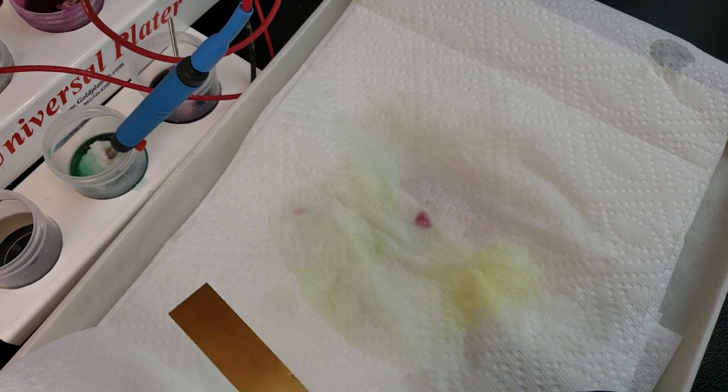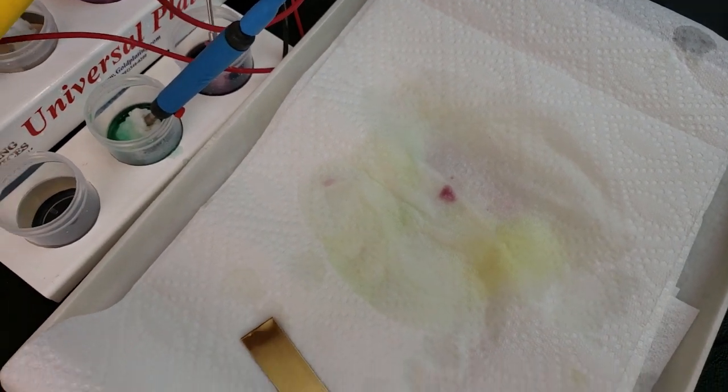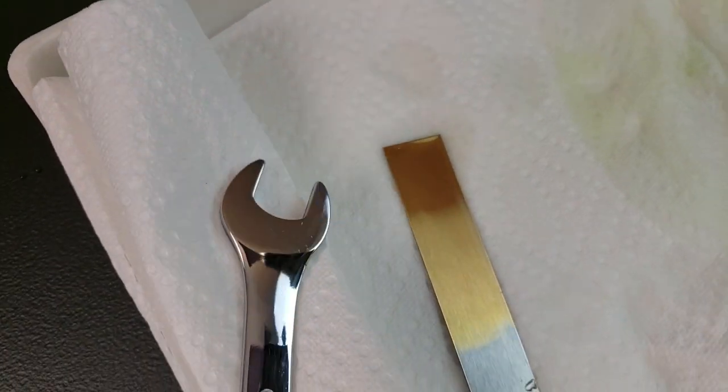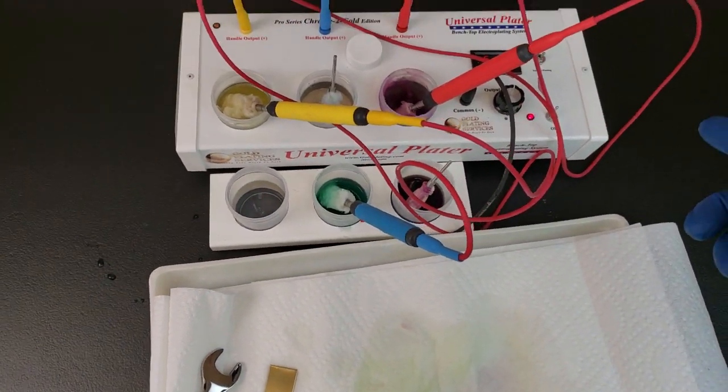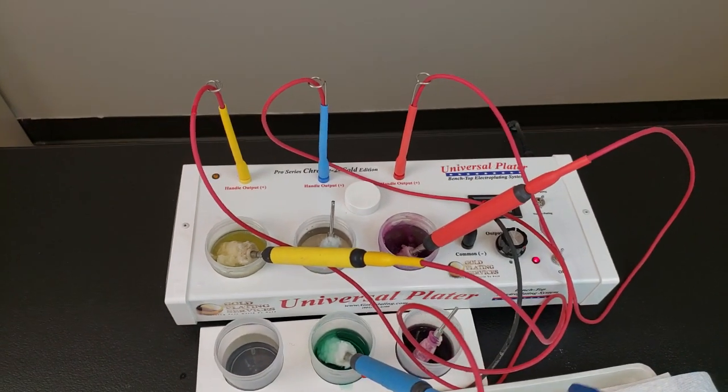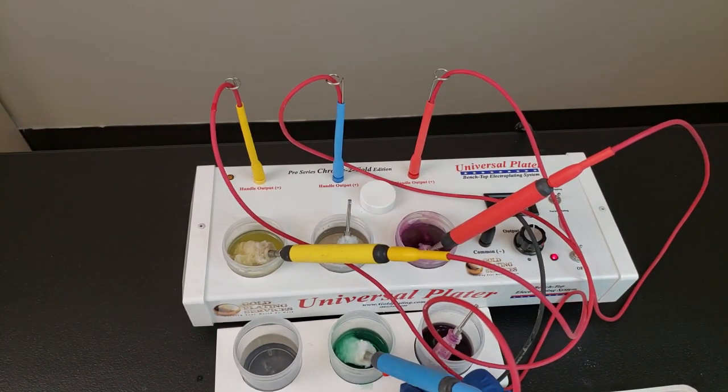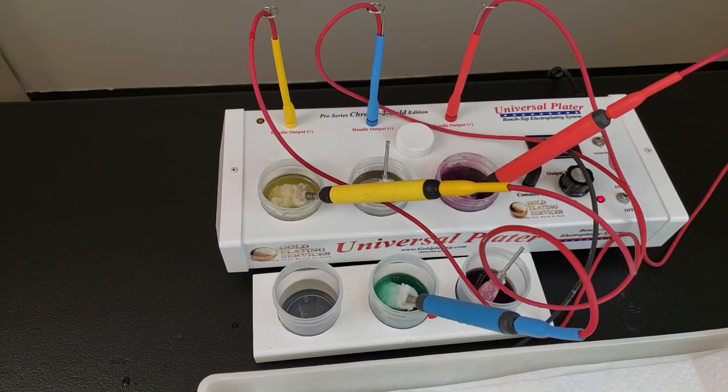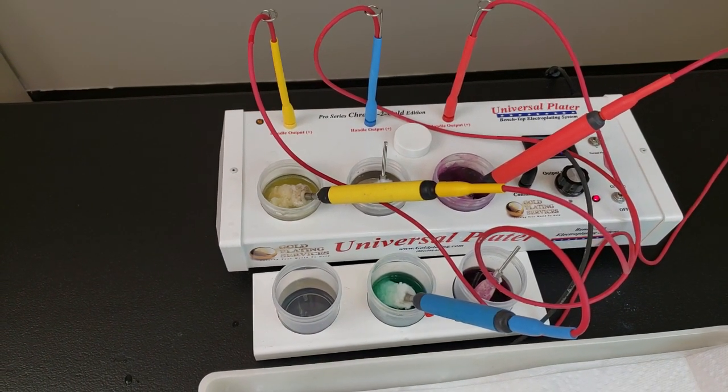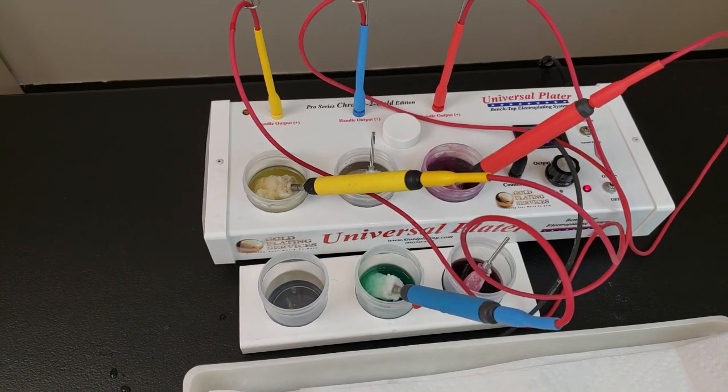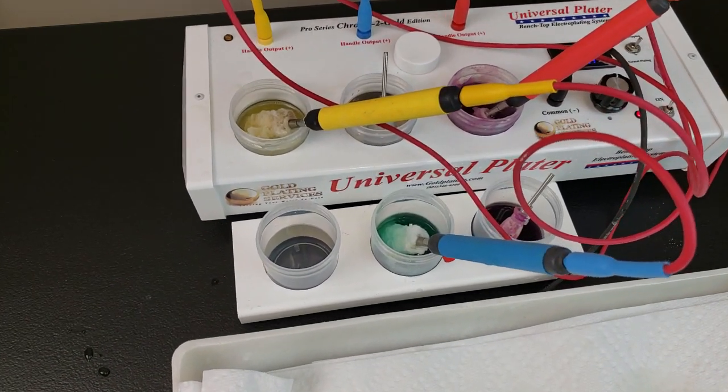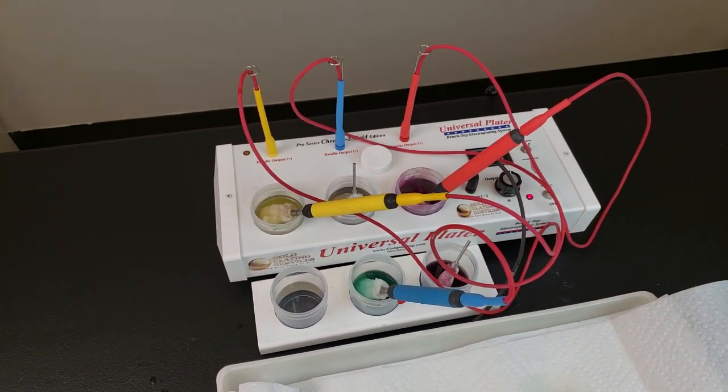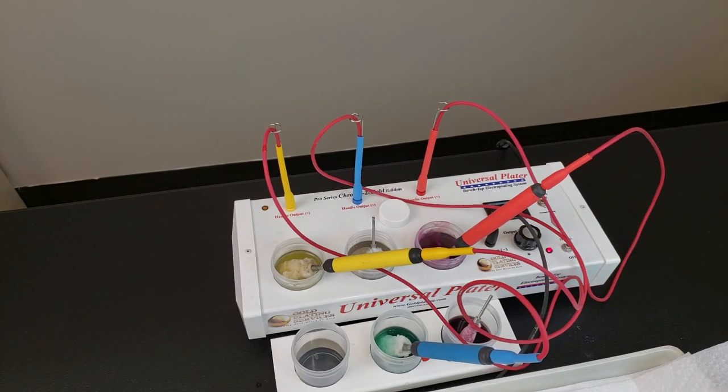If you guys have any specific questions about this or something didn't make sense, just please comment below. You can always email or give us a call. And again, this is the universal plater chrome edition and this right here you maybe have never seen in a video before. This is our auxiliary beaker tray and it's for this exact situation where you've maybe got other chemicals that you want to work with but you don't want to have to take them in and out and all that stuff. It's pretty convenient. All this stuff can be found on our website. If you have any questions give us a call. Comment below and thanks for watching.